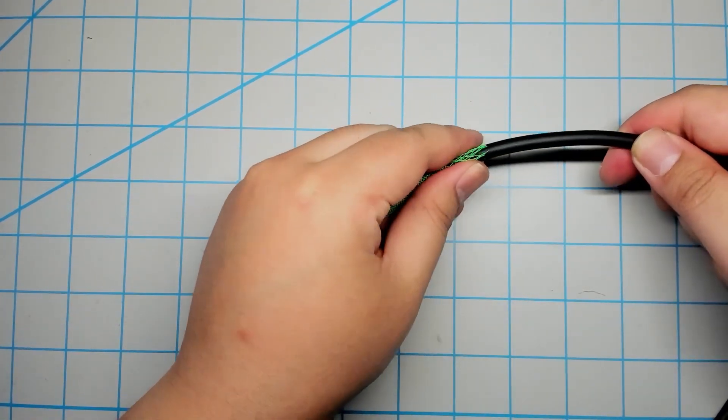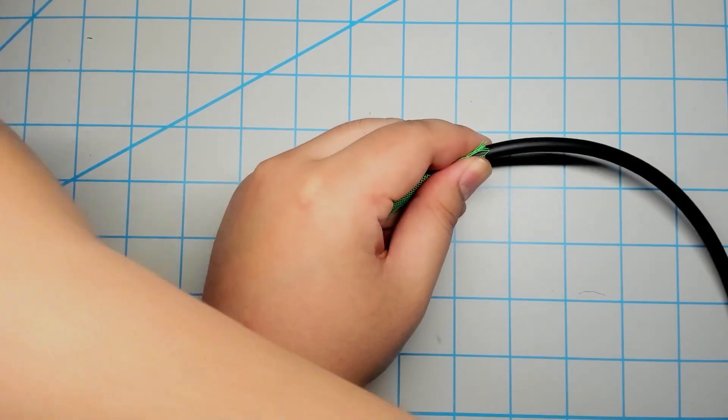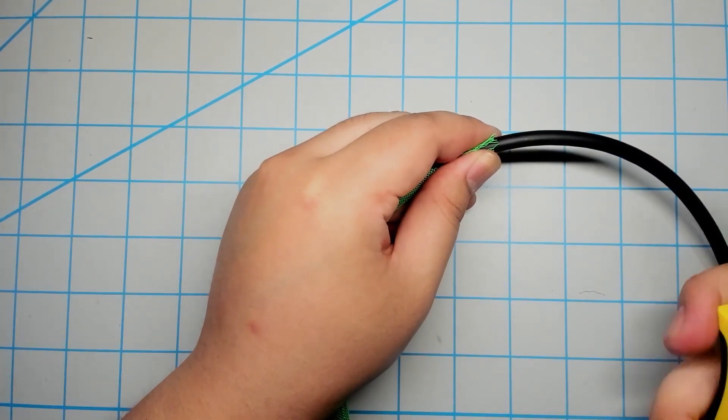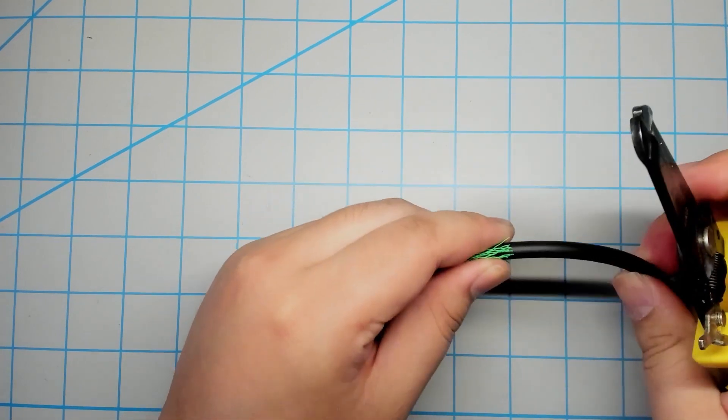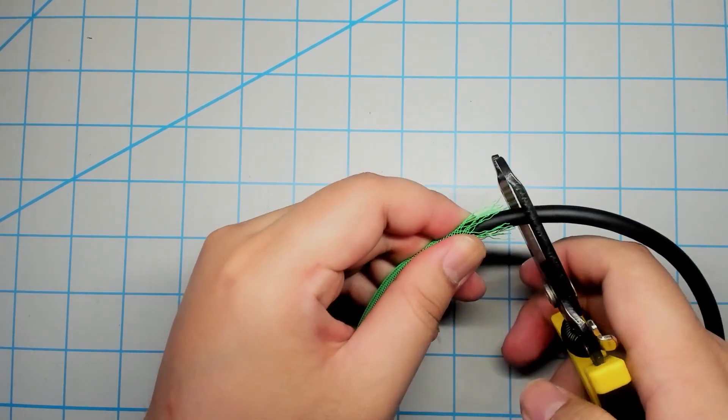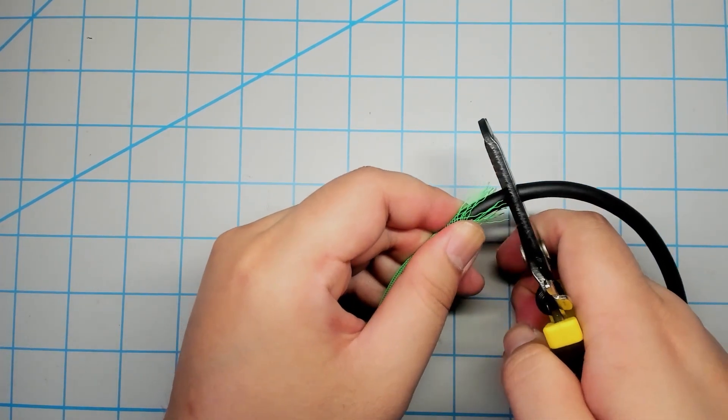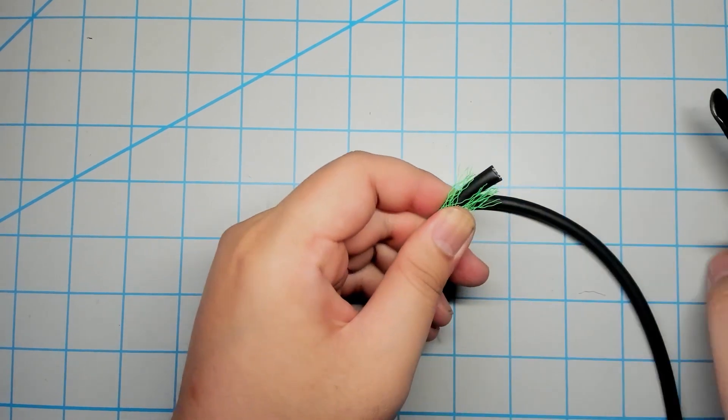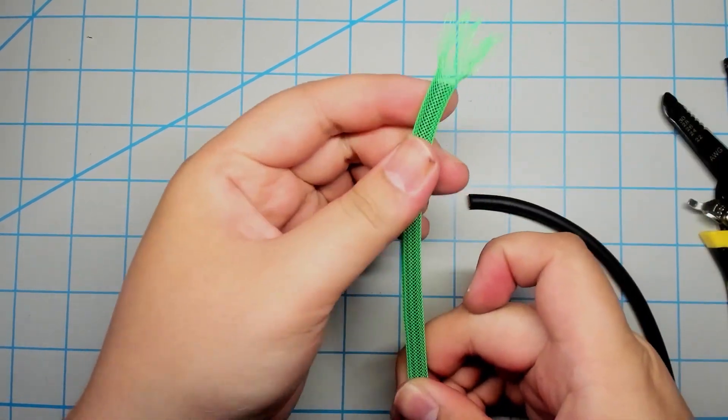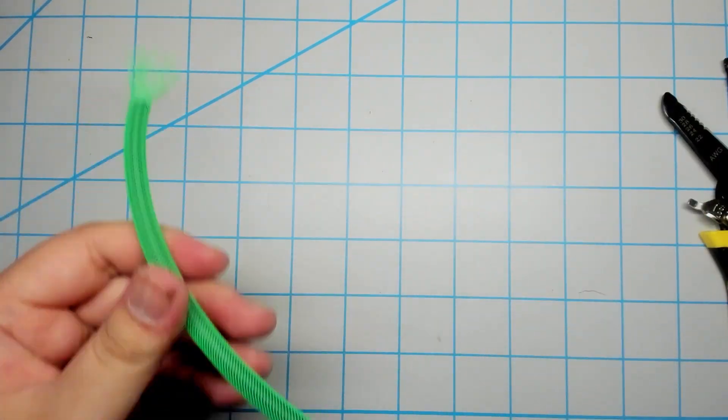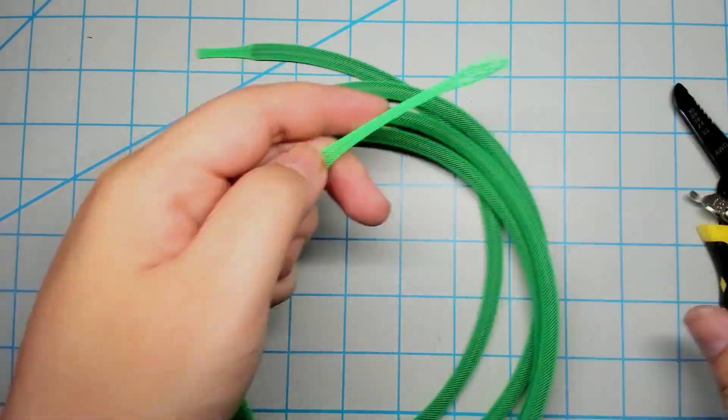At the end of the sleeving I pull back the sleeving a bit and cut the cable. This leaves me with a bit of excess sleeving like I have on the other side.